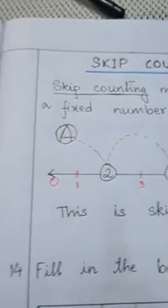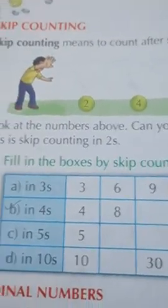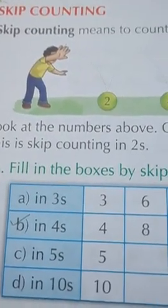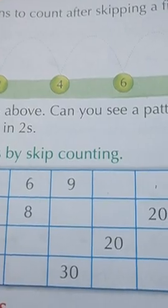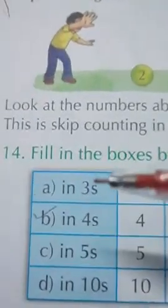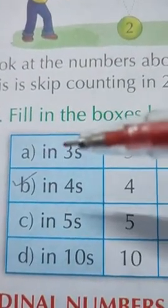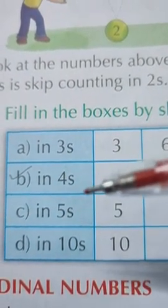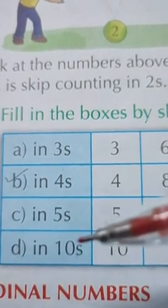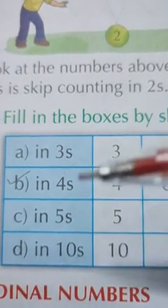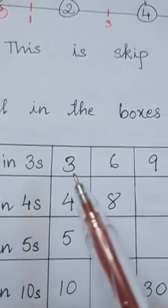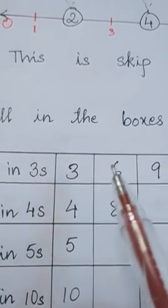Now go to question number 14 in your book, page number 12. Fill in the boxes by skip counting. You have number A in 3s, number B in 4s, number C in 5s, number D in 10s. Now see, question number A in 3s. The first one is written there. The first number is 3.